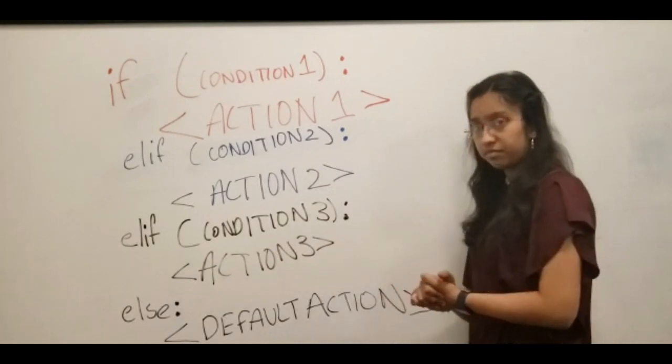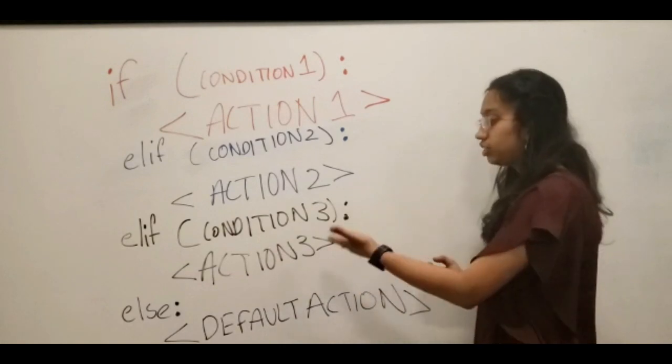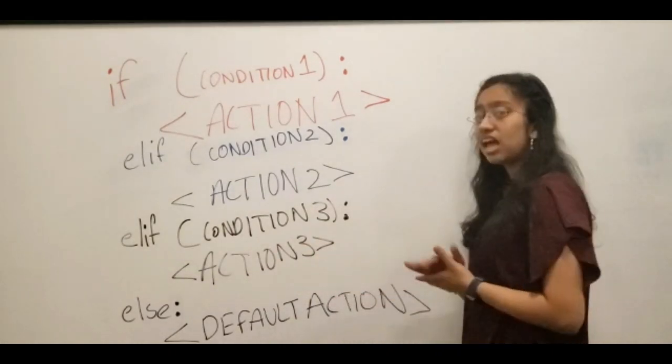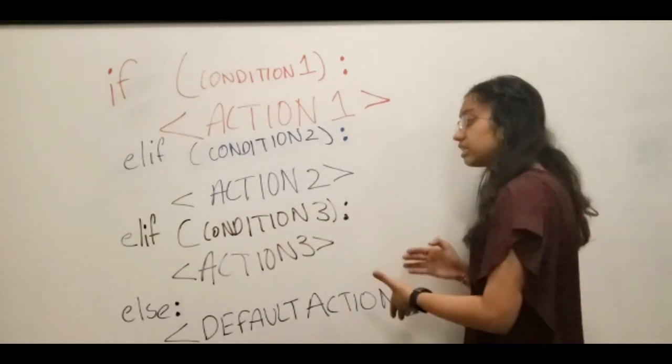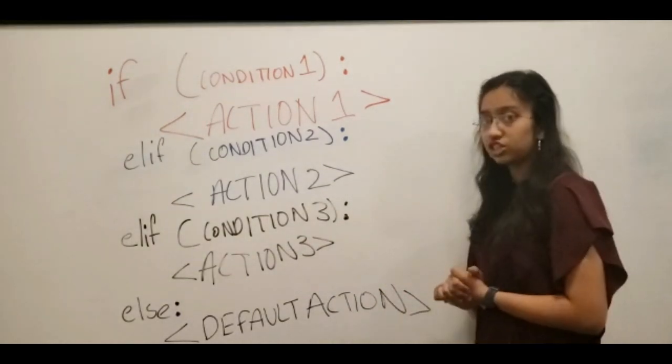If even condition 3 is not met, the program will execute the code for the default action, which is the last else. The last else is not mandatory, but it does help if you want to execute code when none of the above conditions are met.